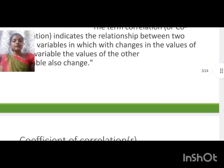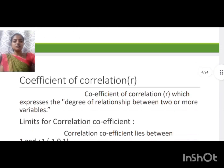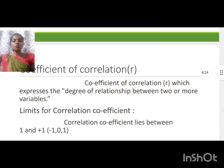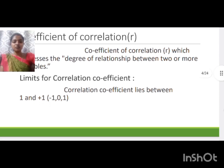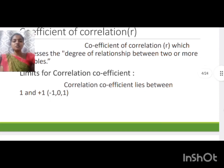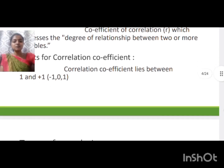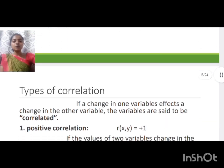The coefficient of correlations expresses the degree of relationship between two or more variables. The limit for coefficient of correlation lies between minus 1 to plus 1.